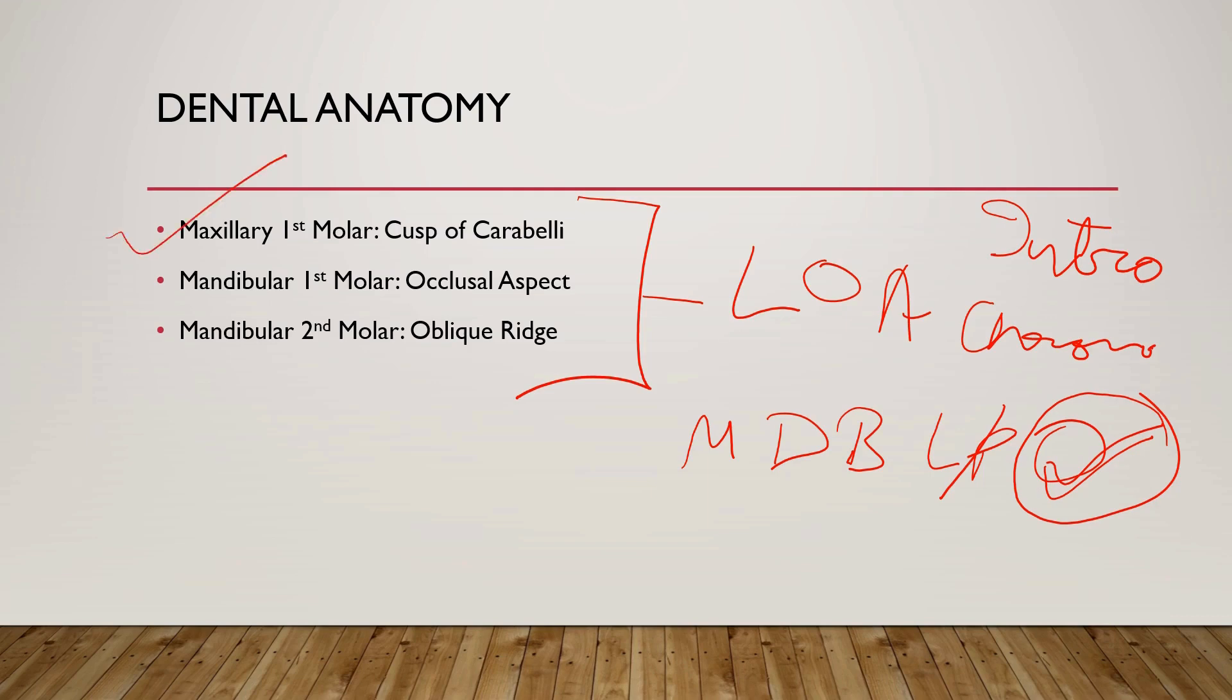For the maxillary first premolar, the palatal aspect is very important because of the cusp of Carabelli. So here is a sixth heading for the aspect in the palatal surface - the cusp of Carabelli. You have to write about how it forms and what is the function of the cusp of Carabelli. Then you also have to draw diagrams with the respective aspects and write about the root.